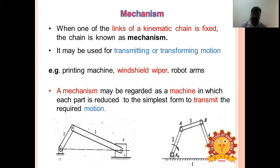Types of mechanism: mainly classified into two types — simple mechanism and compound mechanism. A simple mechanism has four links; examples include a four-bar chain and single slider crank mechanism. A compound mechanism has more than four links.